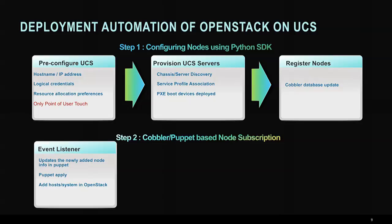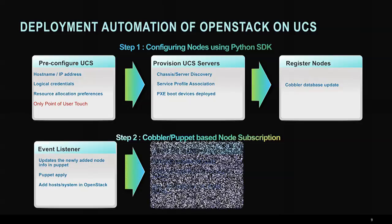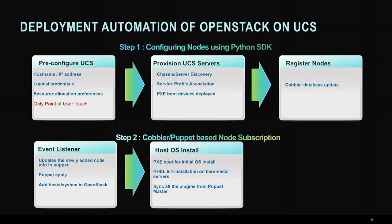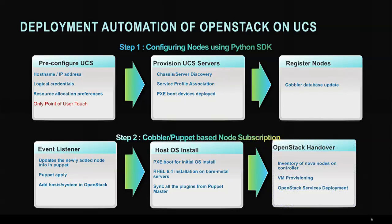Once these new nodes are discovered, if they need a new image that can be PXE-booted — whether it's RHEL 6.4, 6.5, or RHEL 7.0 — they are automatically part of your OpenStack deployment. This is just one example of the automation we have, which makes it very easy to get started with OpenStack and UCS and to scale your deployment.